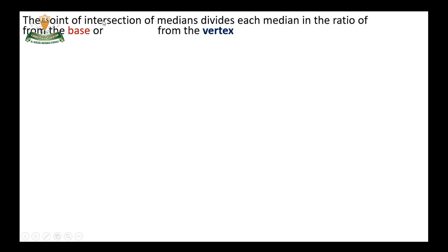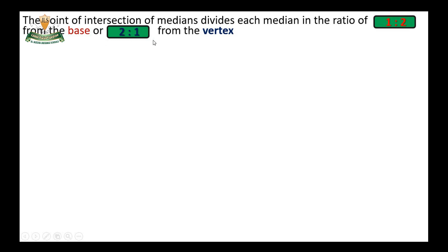The point of intersection of the medians divides each median in the ratio of one to two from the base, and two to one from the vertex. That is, one part from the base and two parts from the vertex.